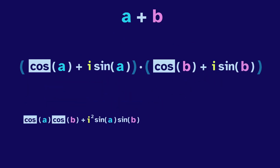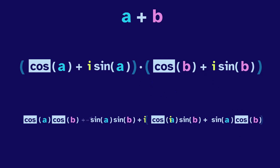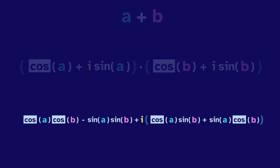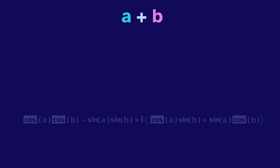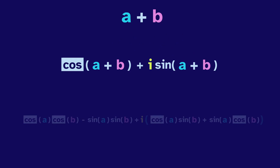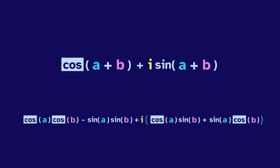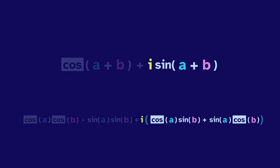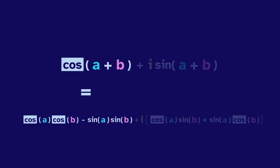We can then distribute, substitute i² for negative one, and rearrange. Or starting again with A plus B, we could convert the sum directly: cosine of the sum plus i times sine of the sum. So we have these two different results from the conversion. We can match the sections with an i to get the sum identity for sine, and the sections without an i to get the sum identity for cosine.